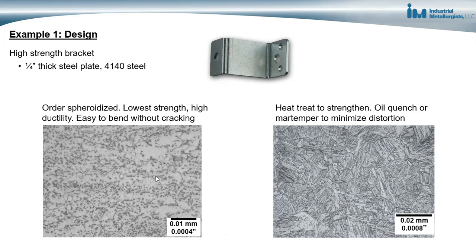The microstructure in this condition consists of particles of cementite in a ferrite matrix. After the part is formed, it can be heat treated to strengthen it — this could involve an oil quench followed by a temper, or marquenching. In either case, we'd select the process to minimize distortion of the bracket. That's one example of applying metallurgy to engineering a component: identifying the alloy, the condition in which to order it, and the heat treatment used after forming.